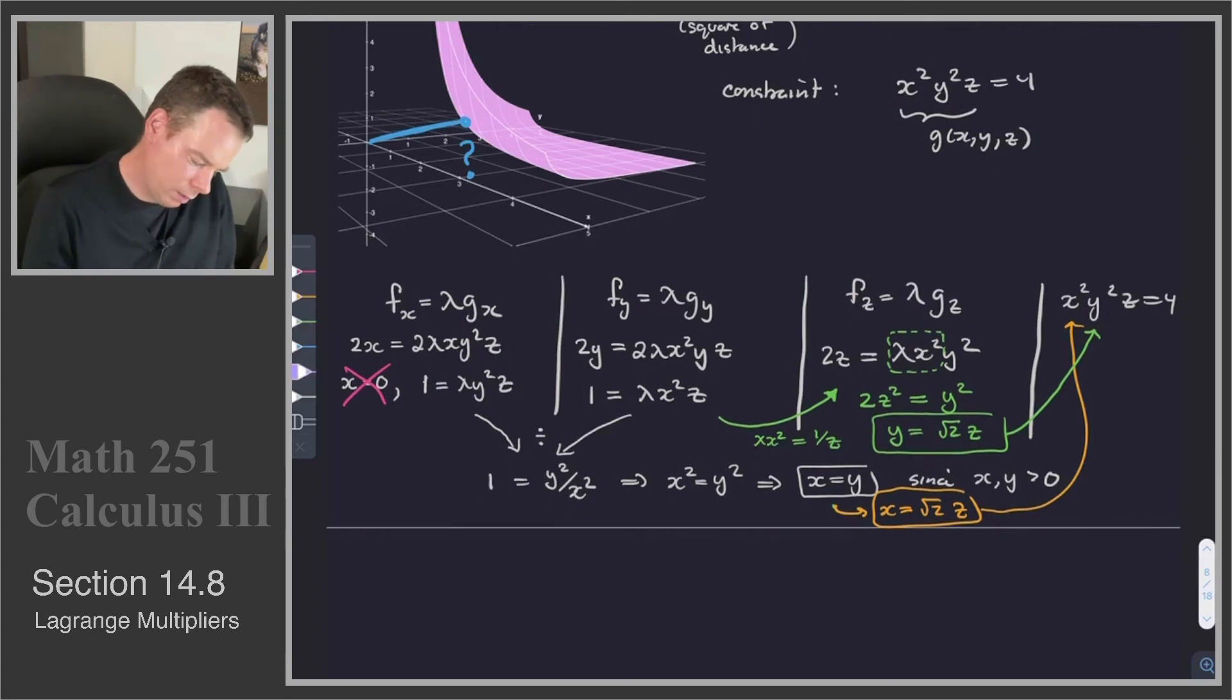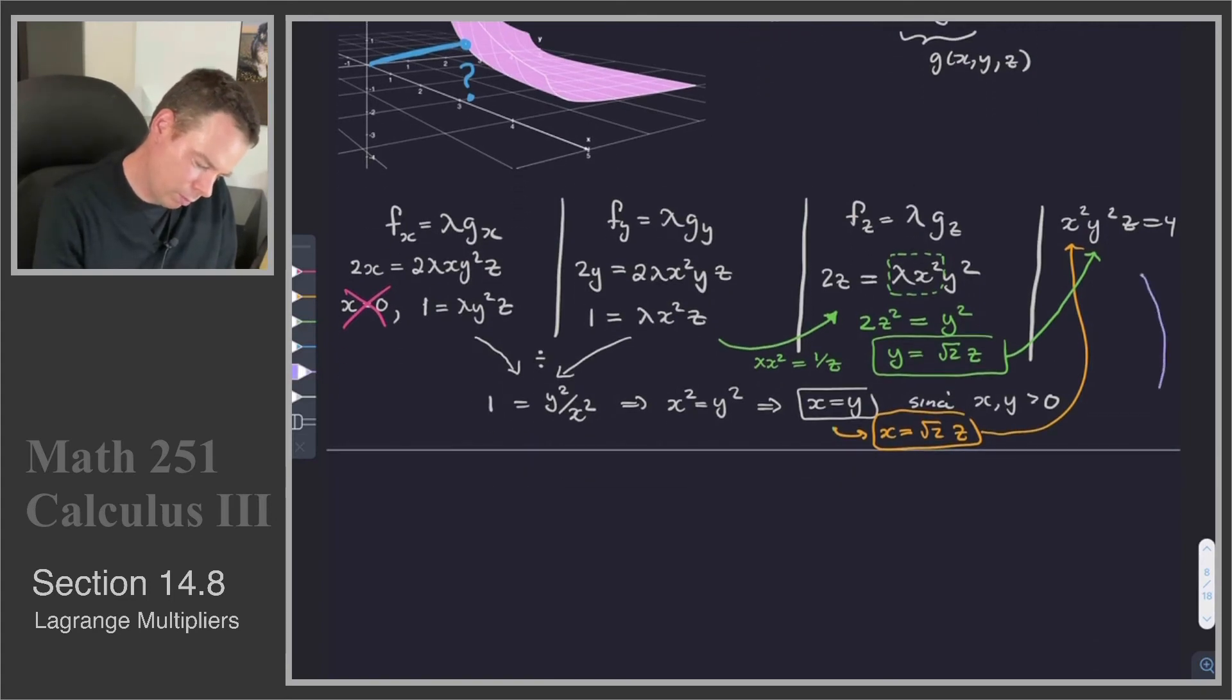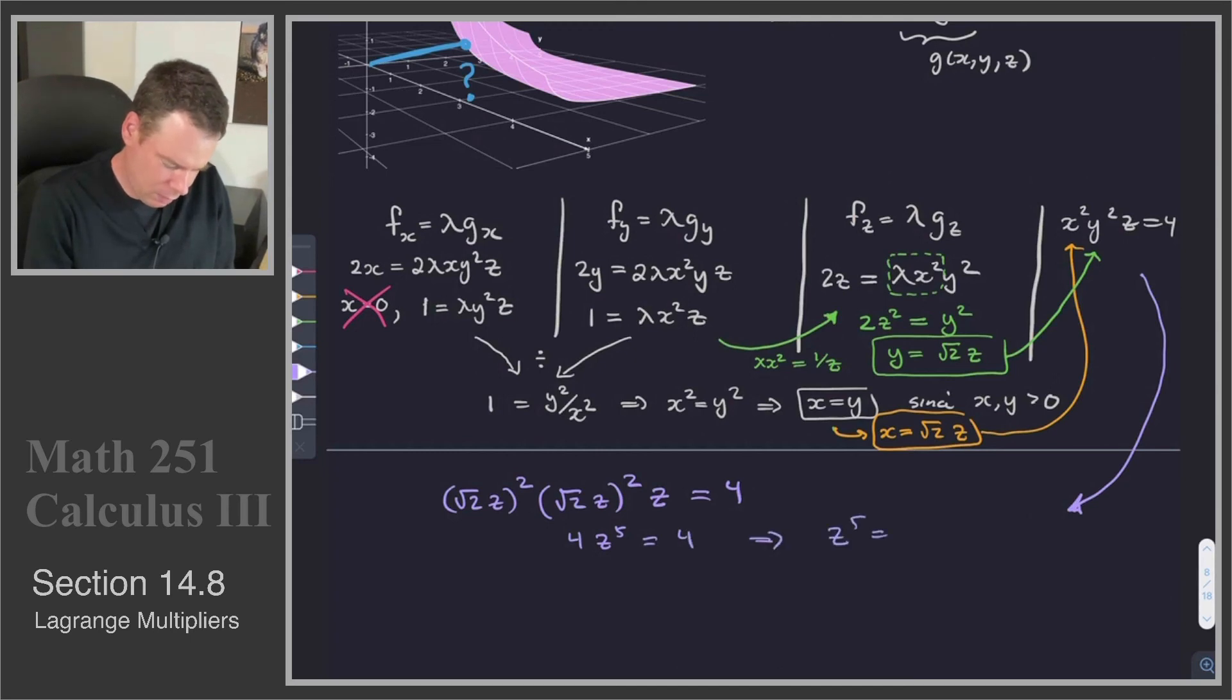And what we get is, maybe I'll, rather than cram it into that top corner, we'll write it out here. So then we get that x, which is root 2 z all squared, times y squared, y is root 2 z all squared, that's y squared, times z is equal to 4. So this gives us 4 z to the fifth is equal to 4, or z to the fifth is equal to 1, which means z is equal to 1.